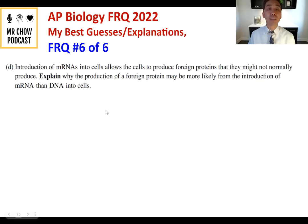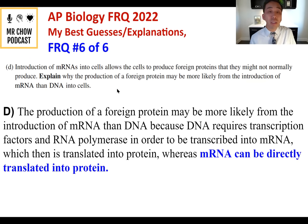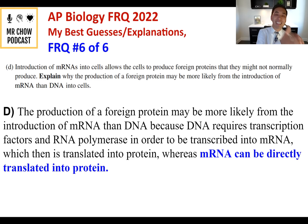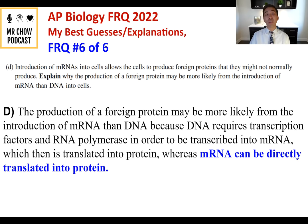Question 6D: Explain why production of a foreign protein may be more likely from introduction of mRNA than DNA. The production of a foreign protein is more likely from mRNA than DNA because DNA requires transcription factors and RNA polymerase to be transcribed and then translated, whereas mRNA can go straight to protein production. Following the central dogma — DNA → mRNA → protein — introducing mRNA skips the transcription step, requiring fewer cellular processes.